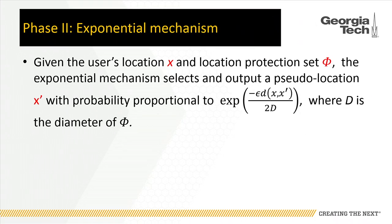After finding this region, we use the exponential mechanism — a simple probability computation. We use the diameter of this protection region and the current location, and sample from the whole location dataset with probability proportional to the exponential parameter, to produce a pseudo location.